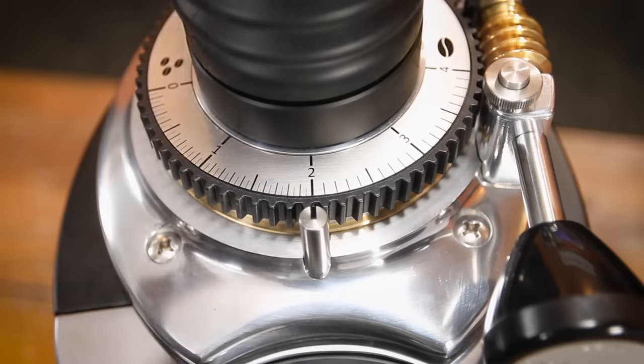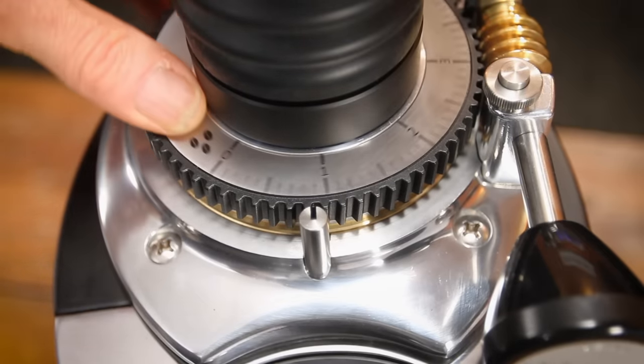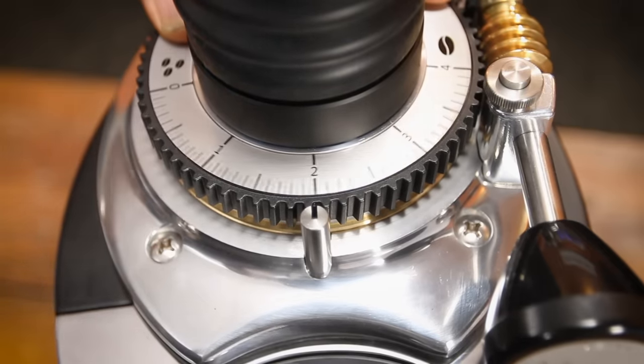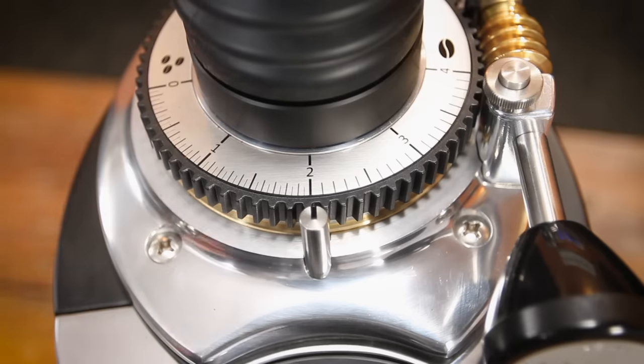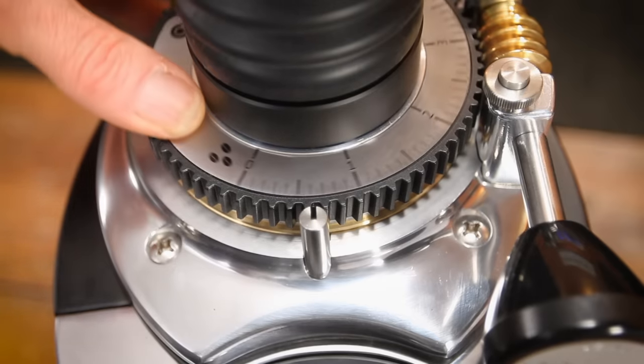Now there's a scale on the adjustment collar to indicate grind setting. It's held in place magnetically so you can adjust it as needed. You can dial in the grind size and then set the scale reference how you like.